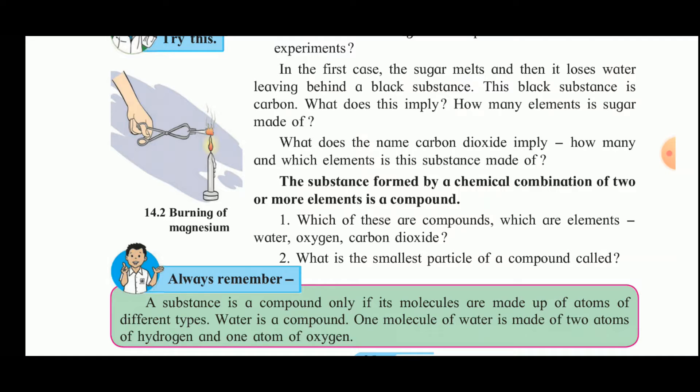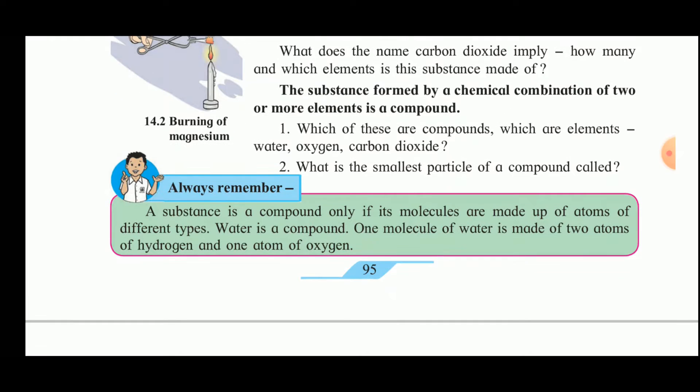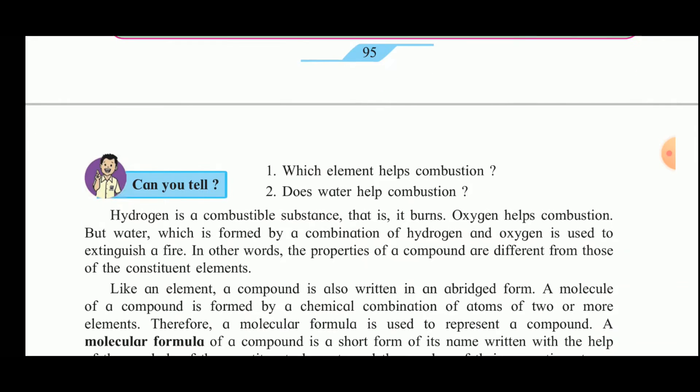What is the smallest particle of a compound called? The smallest particle of a compound is called a molecule. A substance is a compound only if its molecules are made up of atoms of different types. Water is a compound. One molecule of water is made up of two atoms of hydrogen and one atom of oxygen.